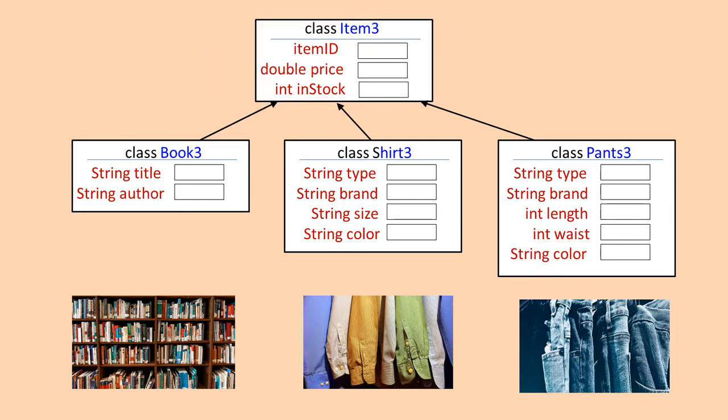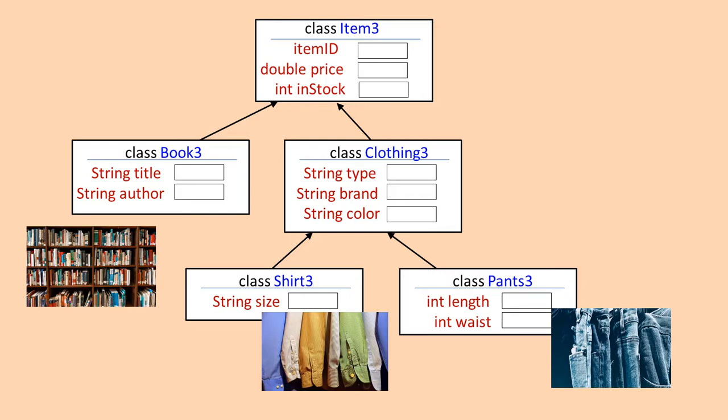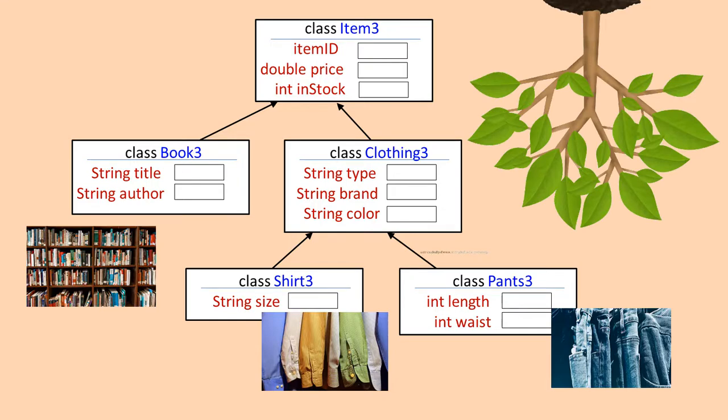When I look even closer, I can see that the class definition for clothing items also share several fields such as the type of clothes, brand, and color. Here is an expanded diagram showing the relationship for class item, class book, class clothing, class shirt, and class pants. Thinking of this diagram as an upside down tree, item can be considered a root node and everything branches off of it. Clothing is a branch node, but book, shirt, and pants are all leaf nodes because they do not have any inherited subclasses derived from them.